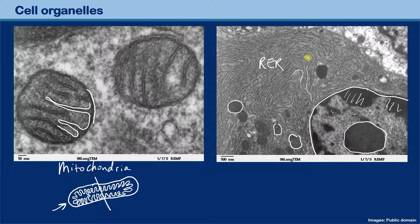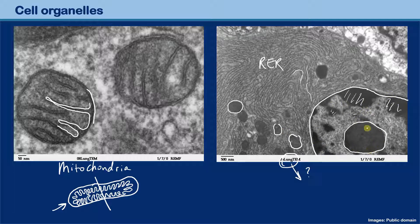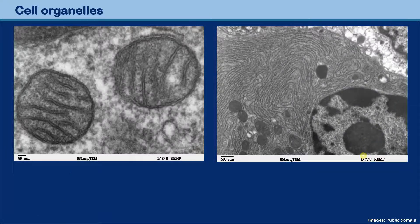It says 'lung' here — could this be a cell secreting mucus? I'm not sure. In any case, you should be able to identify the rough endoplasmic reticulum, the mitochondria, the nucleus, and the DNA inside it. Let's move on to the next and last picture.